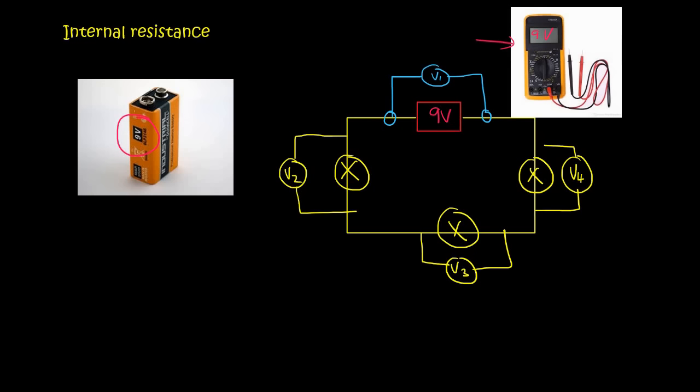If you then had to go measure V2 maybe that would be 2 volts, V3 would be 5 and then V4 would be 2 volts. So that when you added each of those up you would get to 9 volts. So life is perfect.